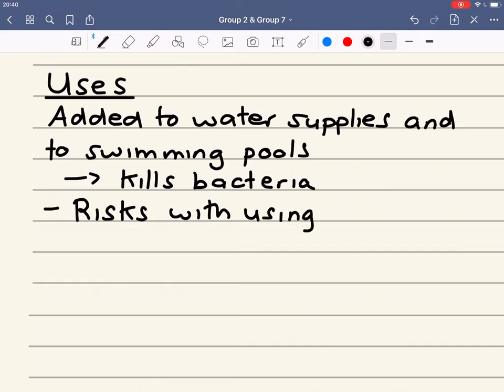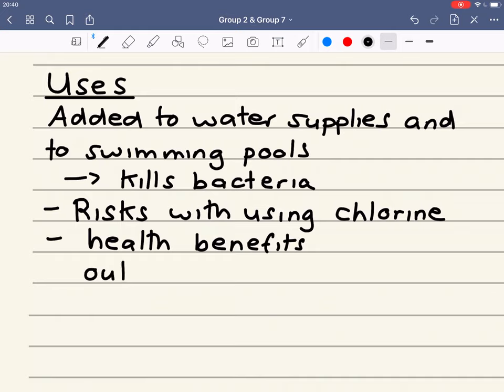There are risks associated. Risks with using chlorine in adding it to swimming pools or water supply. However, the health benefits outweigh the risks. So even though it is toxic to humans, the health benefits we get by adding it to the water, killing the bacteria, outweigh any risks associated.